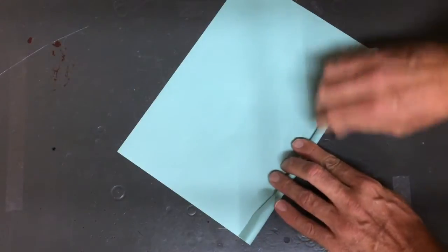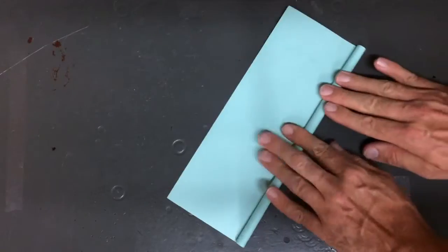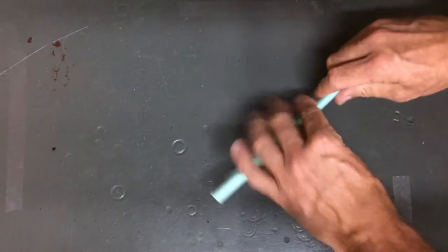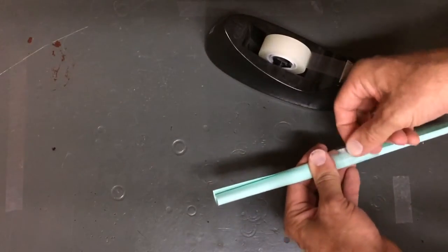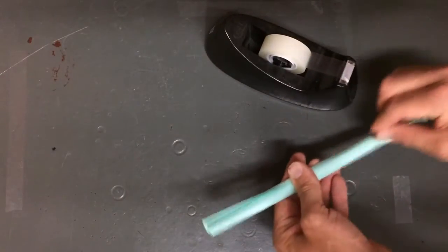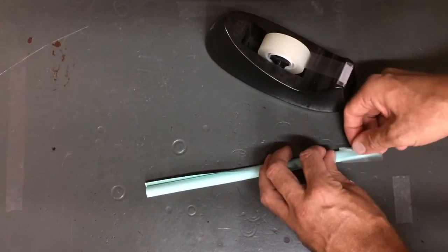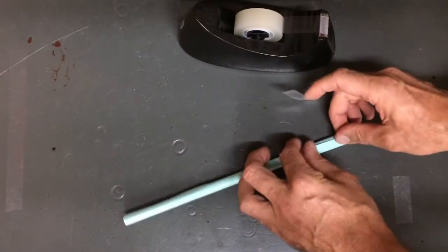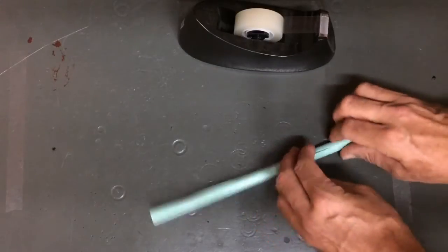Now this tube doesn't have to be perfect. You see that I'm just rolling it along, and then I'm just going to take some scotch tape, and tape it, and then the other end, and I'm done.